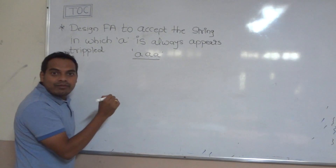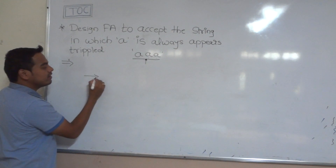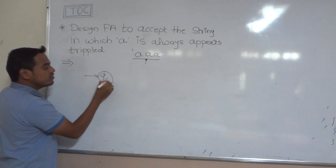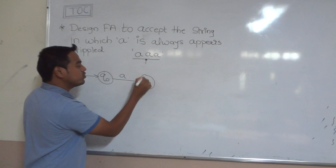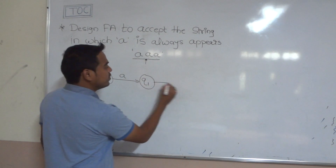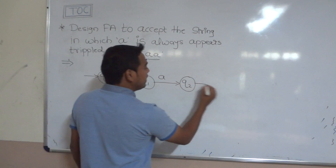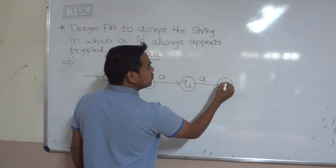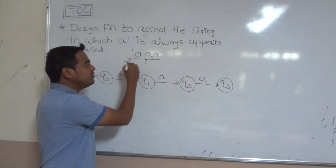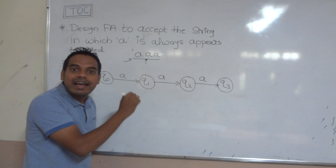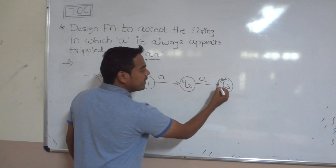How do we design the finite automata for this minimum string? We start at state Q0. When A appears at Q0, it goes to Q1. When A appears at Q1, it goes to Q2. When A appears at Q2, it goes to Q3. We provide this minimum string to the finite automata, and it is accepted. So we consider Q3 as the final state.